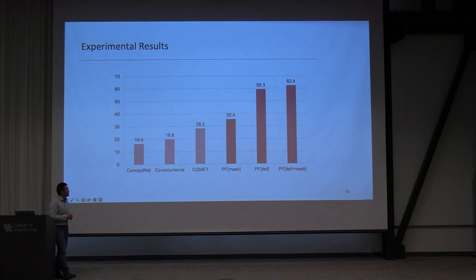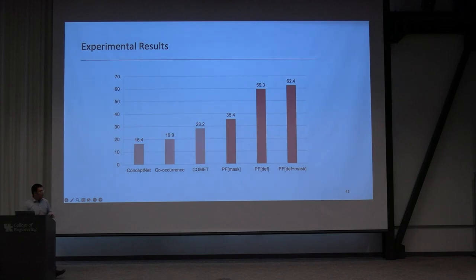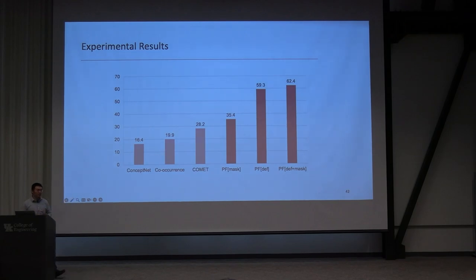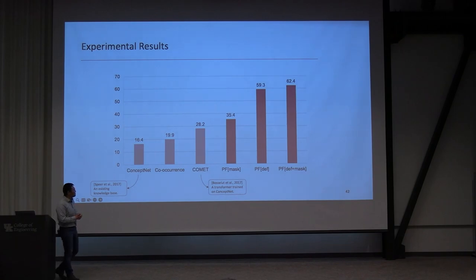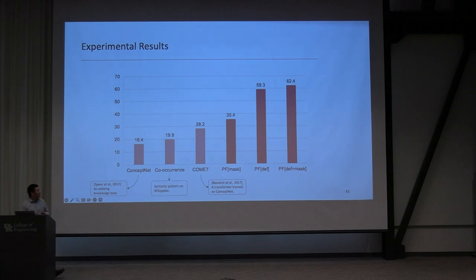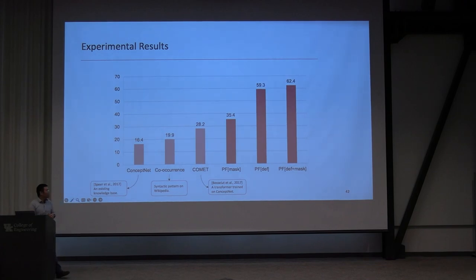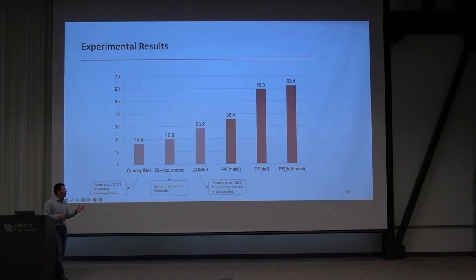We compare our models with multiple baselines. ConceptNet is a widely used knowledge base but has low performance due to coverage issues — many objects are not in the dataset. COMET is a transformer model trained on ConceptNet that can generate content not in ConceptNet. We show that using the masked language model alone already outperforms previous baselines, and adding the definition gives a great boost. Combining both together provides further improvement.